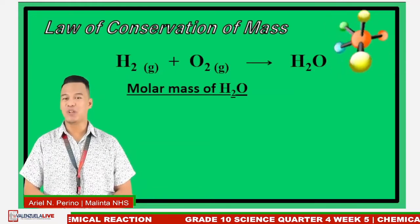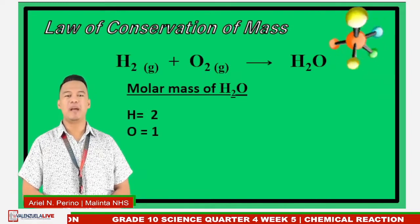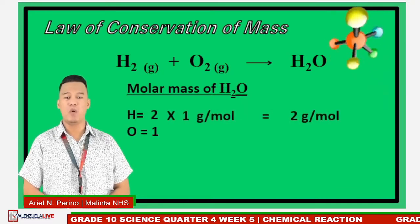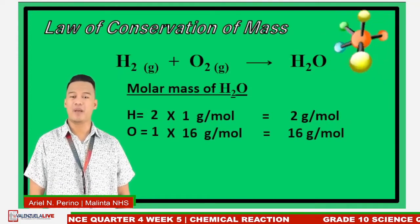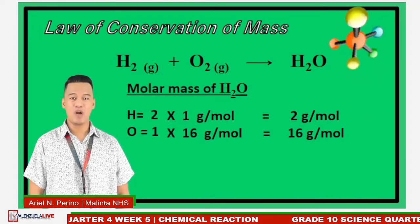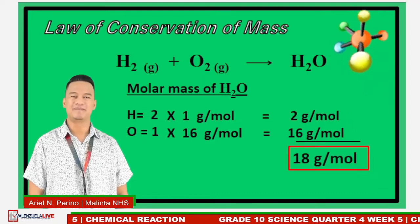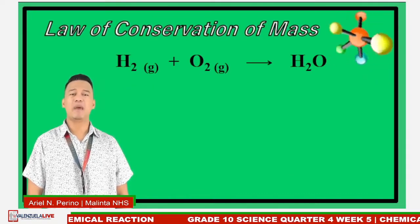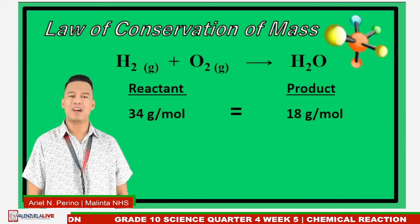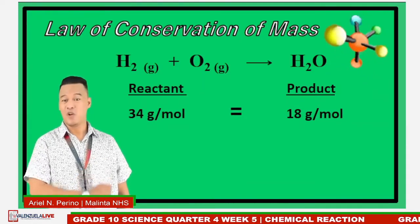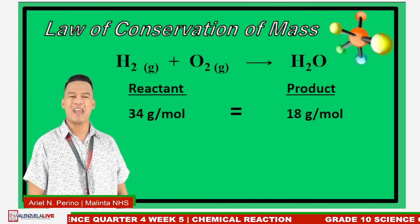Time is up! For the water molecule H₂O, we have two hydrogen and one oxygen. Multiply two hydrogen atoms by the atomic mass of hydrogen, 1 gram per mole, plus one oxygen atom multiplied by its atomic mass, 16 grams per mole. The molar mass of the water molecule is 18 grams per mole. The total mass of the reactants is 34 grams per mole, while the mass of the product is 18 grams per mole. Does this chemical reaction follow the law of conservation of mass?